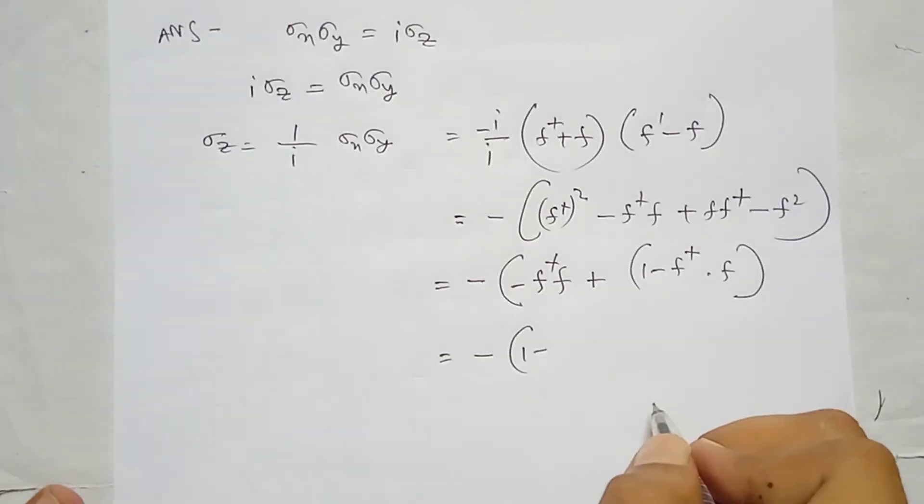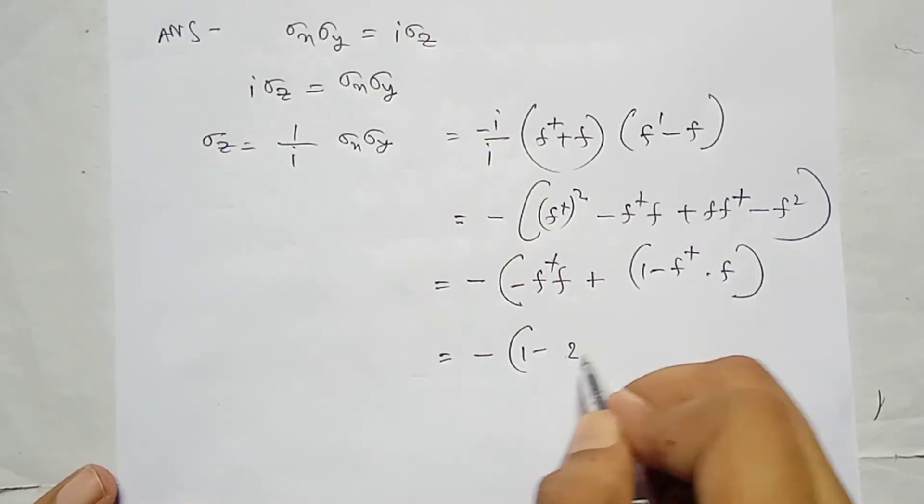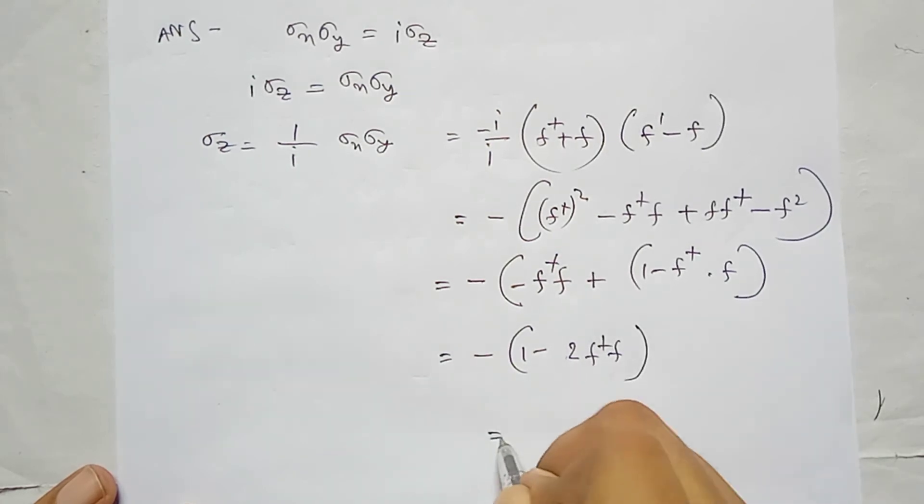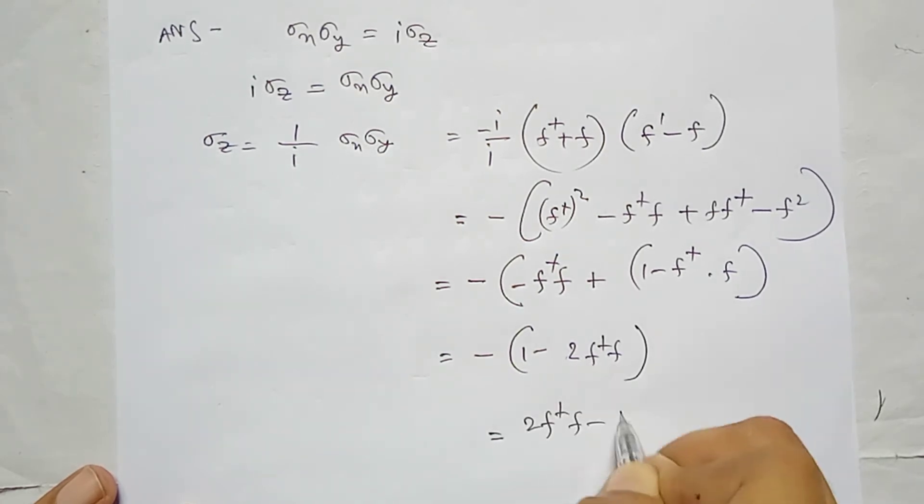This becomes 1 minus 2 times f dagger f, which gives 2 f dagger f minus 1.